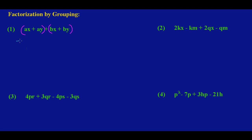This implies that 'a' is common to both. We have 'a' here and 'a' over here, so I'm going to take out what is common. After taking out 'a', I open my bracket: a divided into aX — 'a' will cancel 'a' — leaving X. Then a into aY — 'a' will cancel 'a' — leaving Y. Now I have factorized the first two terms, so I close my bracket.